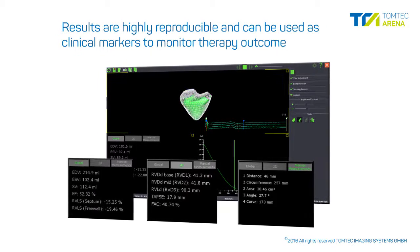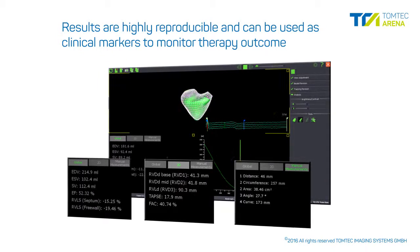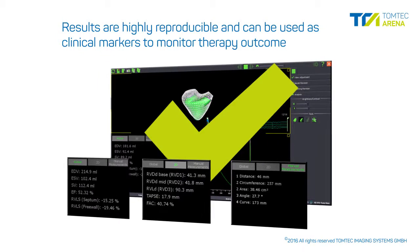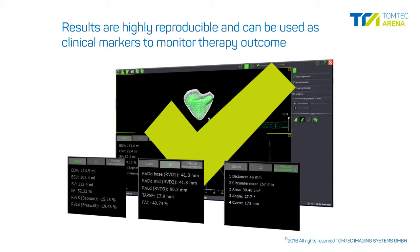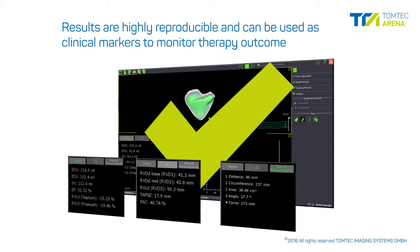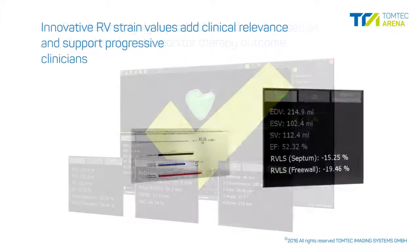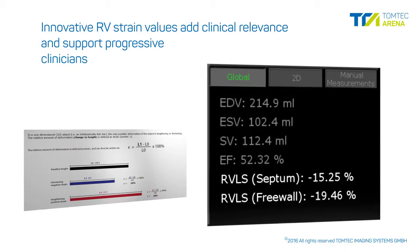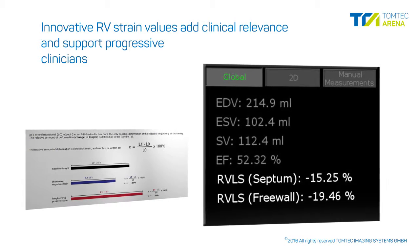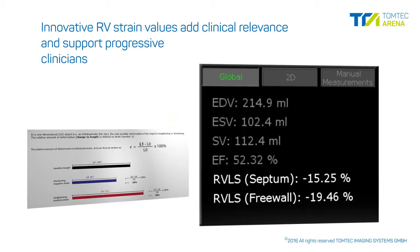The quantitative results are highly reproducible and can be used as clinical markers to monitor therapy outcome. Innovative RV strain values add clinical relevance and support progressive clinicians.